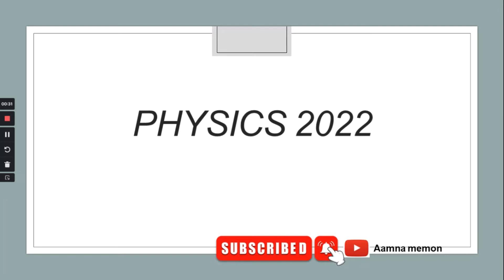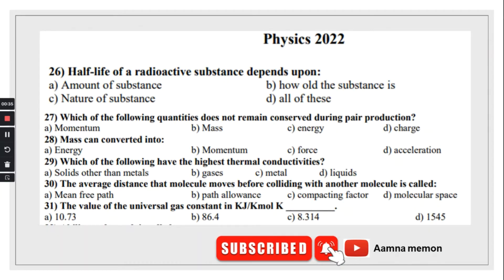Without further ado, let's talk about the physics portion. We have some MCQs. Half-life of a radioactive substance depends upon nature of the substance. Which of the following quantities does not remain conserved during pair production? Mass and energy are conserved, so the right option will be D, charge.